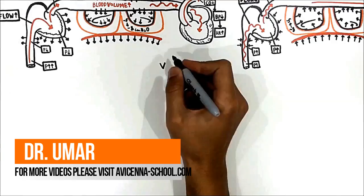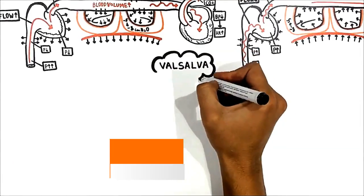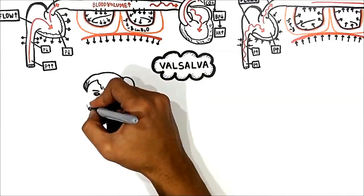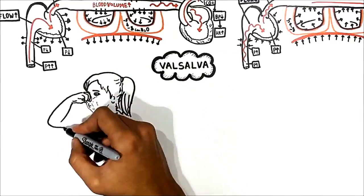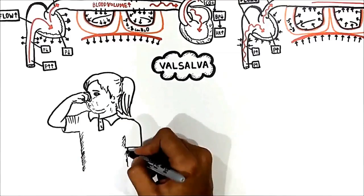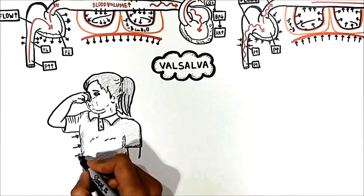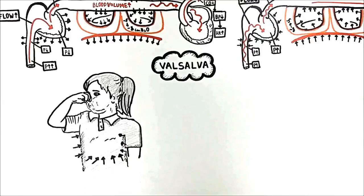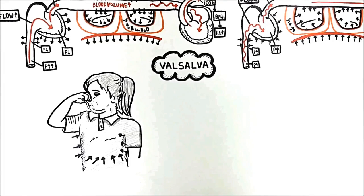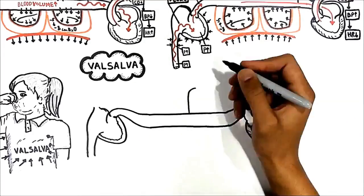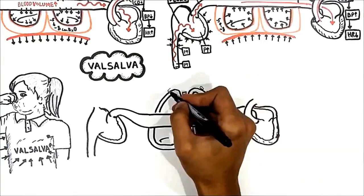Finally, let's see how the Valsalva maneuver changes the blood pressure and heart rate. This is the only thing the USMLE may ask related to the Valsalva maneuver. What is the Valsalva maneuver? When you take a deep breath and close your glottis or mouth and nose, then you squeeze all your abdominal muscles and all muscles that collapse the lungs — intercostal, etc. — trying to expire. This is called the Valsalva maneuver. Let me draw the heart and lungs here and explain what happens and how it affects blood pressure and heart rate.